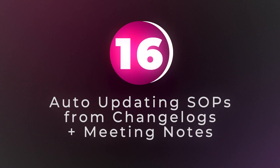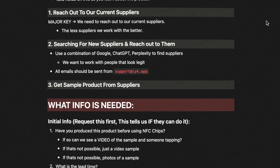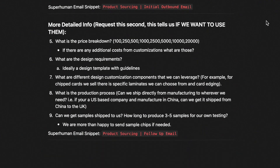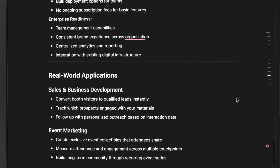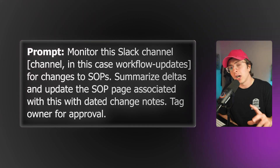Use case number 16: auto-updating SOPs from change logs and meeting notes. Somebody updates a process but nobody updates the documentation — Notion agent fixes this. SOPs — standard operating procedures — are documents that clearly identify how to do a task, and these docs go stale. You can bring in conversations or new product docs and Notion agent can flag existing SOPs that they may impact, then suggest changes for your approval. Here's a prompt: 'Monitor this Slack channel for changes to SOPs. Summarize these changes and update the SOP page associated with this dated change. Tag an owner for approval.' You connect to Slack, Google Drive, point it to the SOP and reference docs, and it requires human sign-off. This helps keep your documentation current — the more outdated your documentation, the more mistakes you end up making.